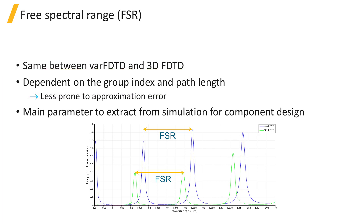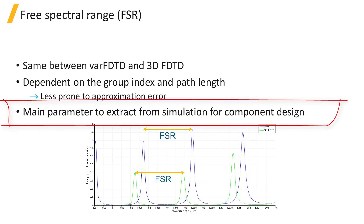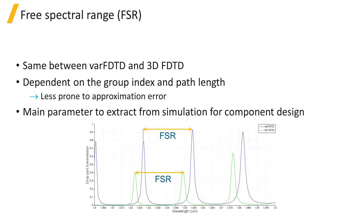It turns out that the free spectral range is typically the main quantity that the component designer would be interested in extracting from the simulation, since small differences in the fabrication of each device will lead to much larger variations in the resonant frequencies and Q factor between individual devices after fabrication, compared to the differences we see in the results between VARFDTD and 3D FDTD.